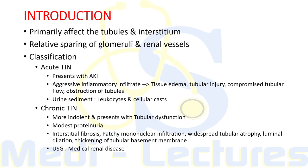Normally, inflammation or fibrosis of the renal interstitium and atrophy of the tubular compartment are a common consequence of diseases targeting glomeruli or vasculature. However, distinct from these secondary phenomena, there is a group of disorders that primarily affect the tubules and interstitium with relative sparing of glomeruli and renal vessels. These disorders are termed tubular interstitial nephritis.